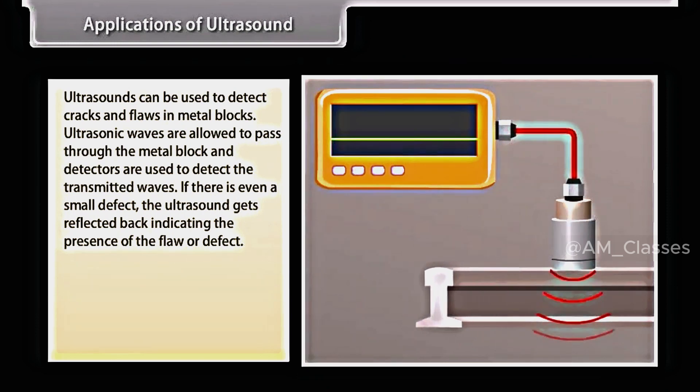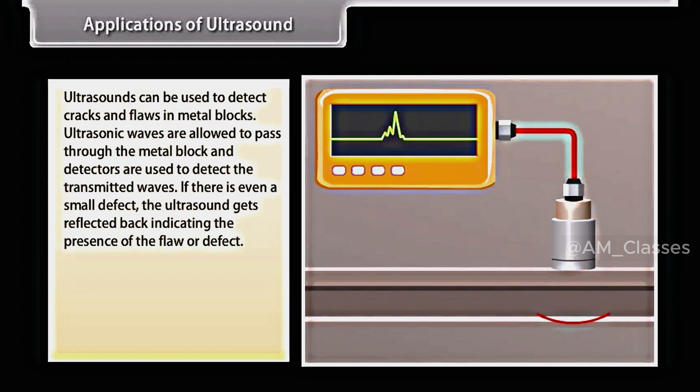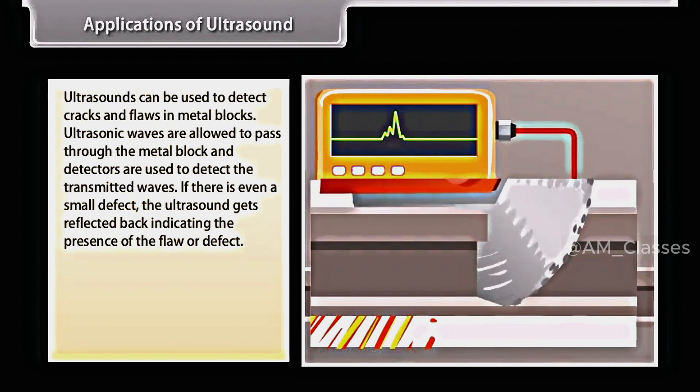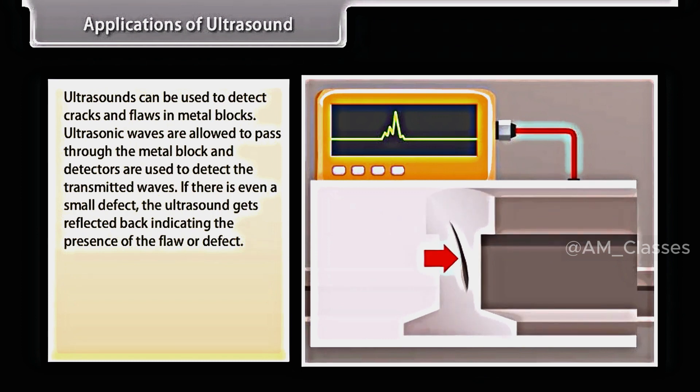Ultrasounds can be used to detect cracks and flaws in metal blocks. Ultrasonic waves are allowed to pass through the metal block and detectors are used to detect the transmitted waves. If there is even a small defect, the ultrasound gets reflected back indicating the presence of the flaw or defect.